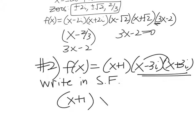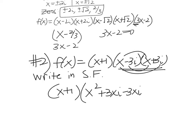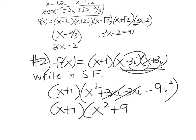x times x is x squared. Outside gives me 3xi. Inside gives me negative 3xi. And then my last term gives me negative 9i squared. All right. So I still have this x plus 1. Here, those i's are going to cancel out. And what is negative 9i squared? It's 9. So we get x squared plus 9.